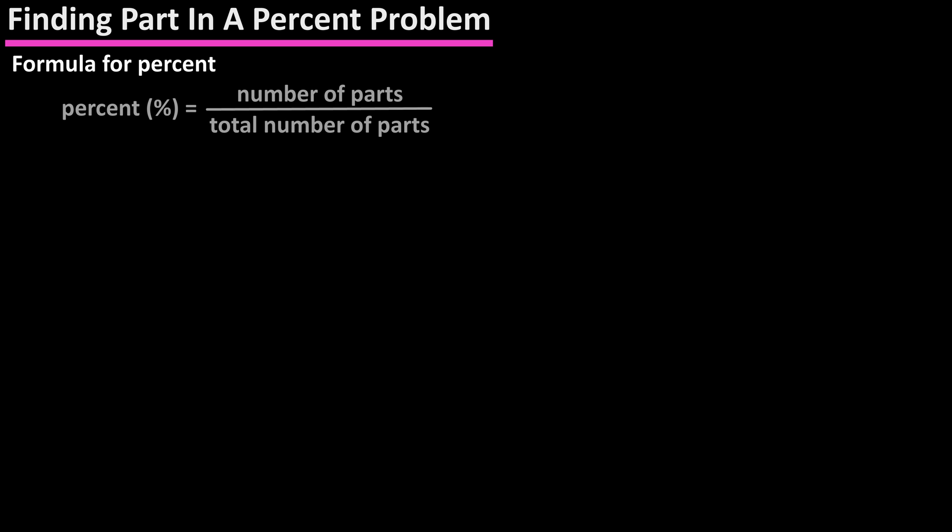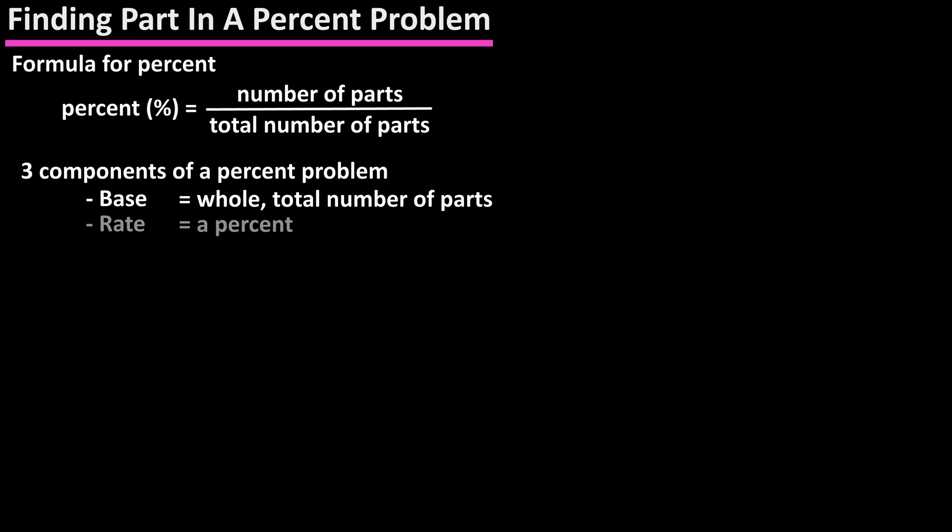The formula for percent is: percent equals number of parts divided by total number of parts. There are three components of a percent problem: the base, which is the whole or total amount of parts; the rate, which is a percent (a number followed by the percent sign); and the part, which is part of the base, a part of the total number of parts.